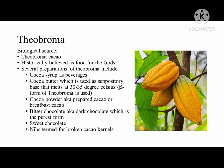Theobroma is obtained from Theobroma cacao, historically believed to be the food of the gods. Several preparations of theobroma include cocoa syrup as a beverage, cocoa butter used as suppository base that melts at 30 to 35 degrees Celsius — the beta form is preferred. Other preparations include cocoa powder (also known as prepared cacao or breakfast cacao), bitter chocolate (also known as dark chocolate, the purest form), sweet chocolate, and nibs, the term for broken cacao kernels.